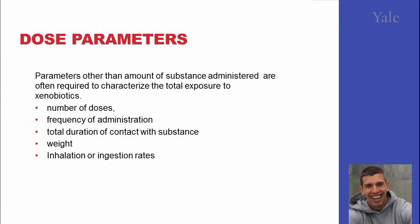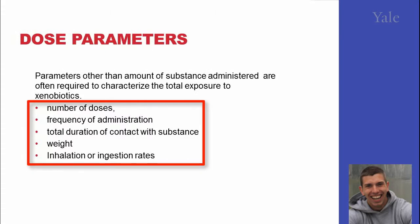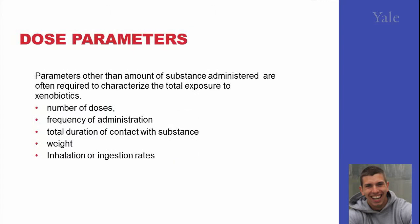In addition to the basic amount of substance administered into the body, other parameters influence the dose — for example, number of doses, frequency of administration, duration of contact with the substance in the environment, inhalation, ingestion, or absorption rates, as well as body weight. It's pretty obvious that if you increase the number of doses, the frequency of exposure, the amount of substance in the environment, or the inhalation rate, then the amount of substance in the body will likely increase as well.